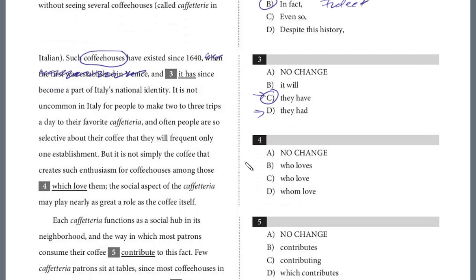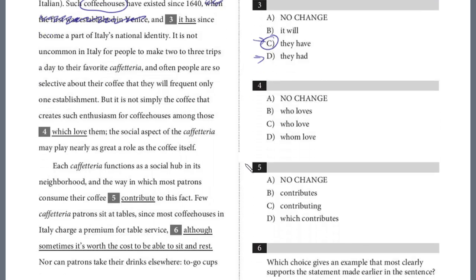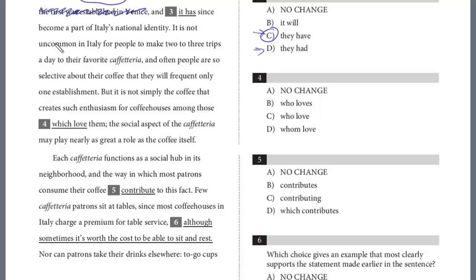All right, and let's take a look, I'm going to scroll down here. It is not uncommon in Italy for people to make two or three trips a day to their favorite caffetteria. And often people are so selective about their coffee that they will only frequent one establishment. But, it is not simply the coffee that creates such enthusiasm for coffee houses. Among those which love them, the social aspect of caffetteria may play nearly as great a role in the coffee itself.